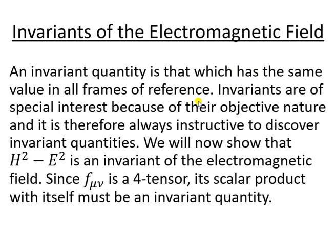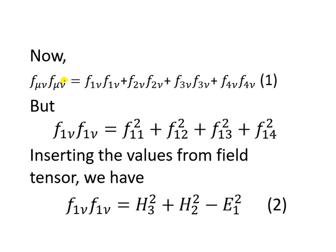When talking about the invariance of the electromagnetic field, we are working with a scalar product. Let us take the scalar product of F_μν — that is, we contract F_μν with F^μν.